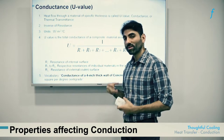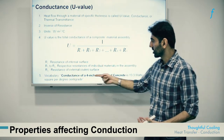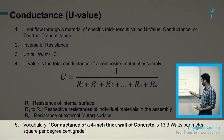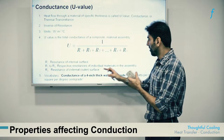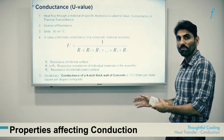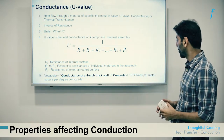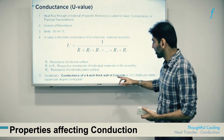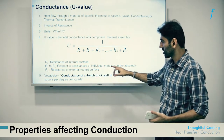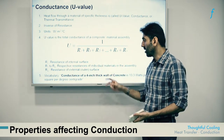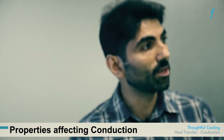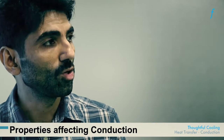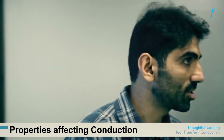In professional practice, one would say: 'the conductance of a 4-inch thick wall of concrete is 13.3 watts per meter square per degree centigrade,' which is 1 divided by the resistance value presented earlier. Conductance is directly dependent on the thickness of the material — the conductance of an 8-inch wall of the same material would be half, because the resistance doubles as thickness doubles. Therefore, mentioning thickness is imperative when speaking of resistance or conductance.